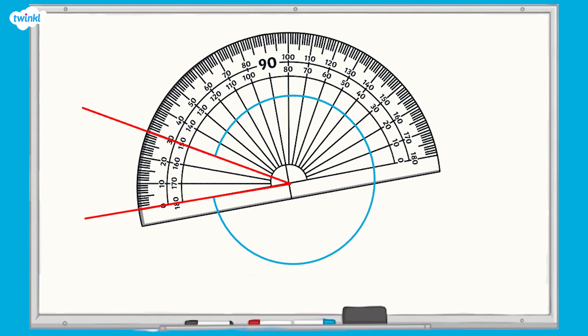the inner angle measures 30 degrees. 360 degrees take away 30 degrees equals 330 degrees. The reflex angle here measures 330 degrees.